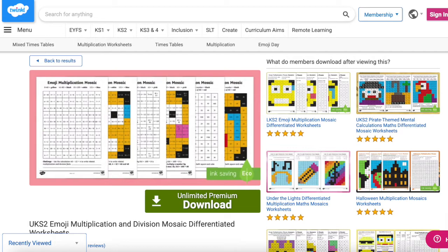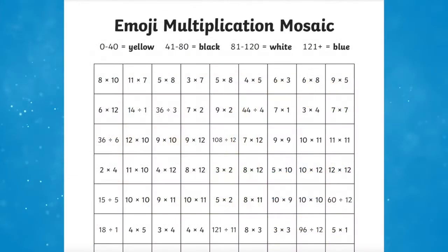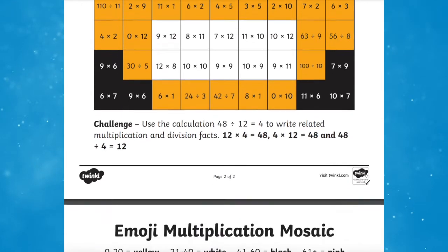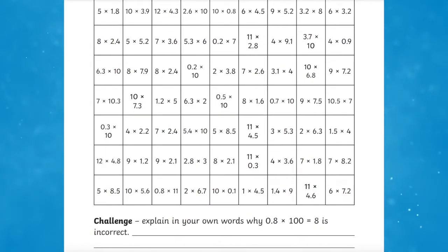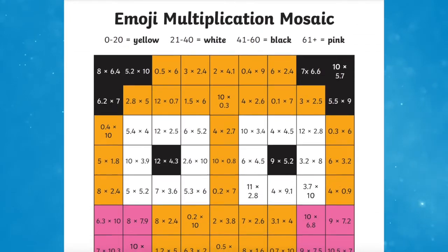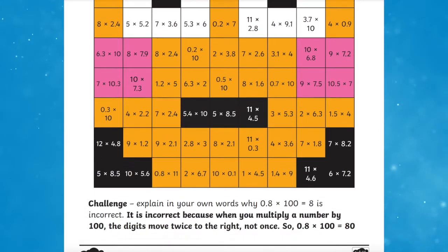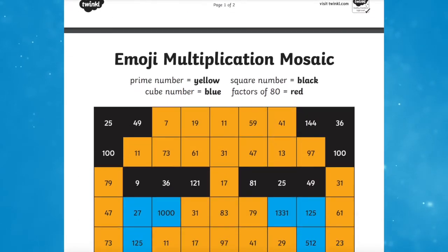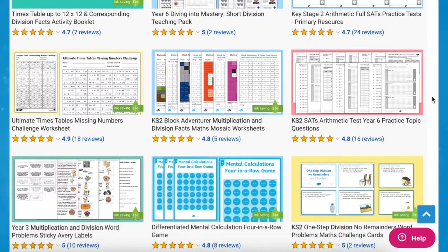Finally, the Upper Key Stage 2 Emoji Multiplication and Division Mosaic Differentiated Worksheets are a really fun way to practice maths fluency by recalling basic facts accurately, quickly and effortlessly. This set of emoji worksheets includes individual sheets for multiplication tables and corresponding division facts up to 12 x 12. A mastery question is included on each worksheet to deepen understanding and promote reasoning skills. As you can see, Twinkle have a wide range of multiplication and division resources. So I hope you've enjoyed this video and you can use some of these resources in your next maths lesson. Thanks for watching and I'll see you again.